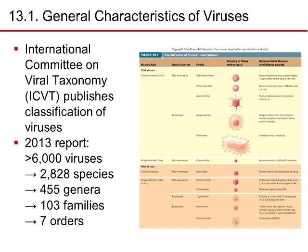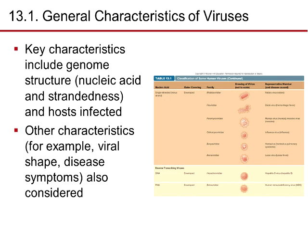The general characteristics of viruses: the International Committee of Viral Taxonomy (ICVT) publishes a classification of viruses. In the 2013 report, there were 6,000 viruses, 2,028 species, 455 genera, 103 families, and seven orders — pretty widespread organisms. Key characteristics include genome structure (the nucleic acid), strandedness, whether circular or linear, and the host that's infected. Other characteristics include viral shape and the disease symptoms it causes.